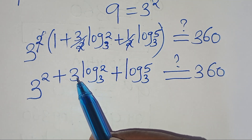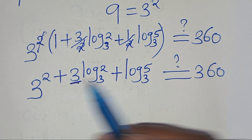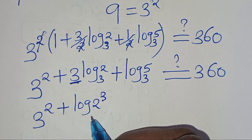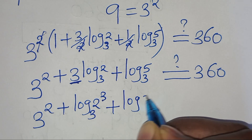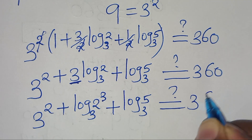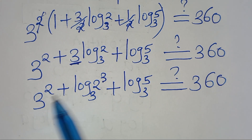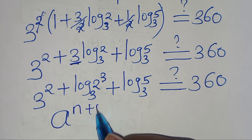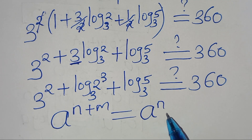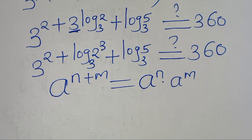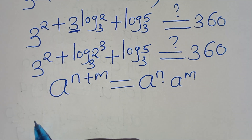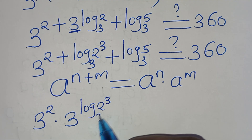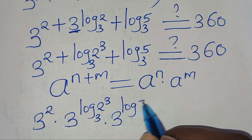So we find that 3 to the power of 2, plus 3·log base 3 of 2, plus log base 3 of 5. This is a sum of exponents, so we can express this as 3 to the power of 2, times 3 to the power of log base 3 of (2 to the power of 3), times 3 to the power of log base 3 of 5, applying the property a^(n+m) = a^n · a^m.